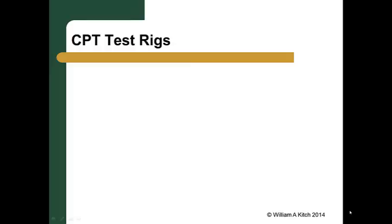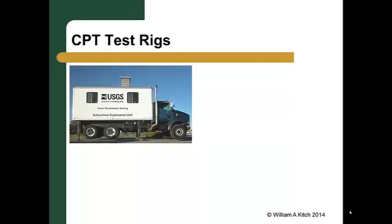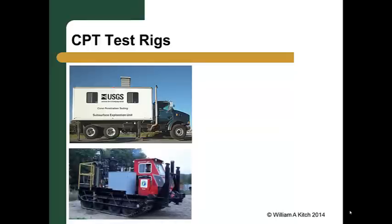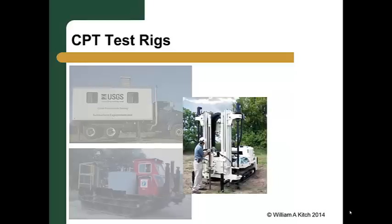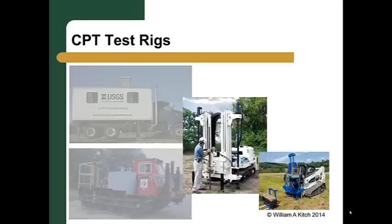CPT testing is most often performed using large truck-mounted rigs. These rigs have a hydraulic jack system to raise and level the truck, and the weight of the truck is used as a reaction mass when pushing the CPT probe into the ground. For sites that can't be accessed by a large truck-mounted rig, smaller track-mounted rigs are available. Very small track-mounted rigs, or rigs that fit on skid loaders, are also available for sites with very limited access. These smaller rigs are lightweight and must have an anchor system to hold them down, since the mass of the rig itself is not sufficient to provide the reaction needed to push the CPT probe into the ground.